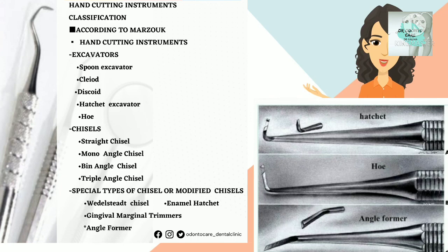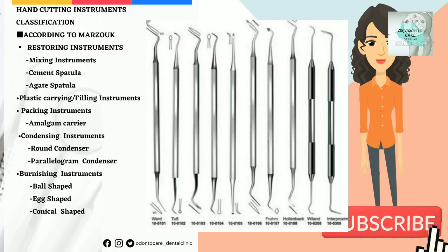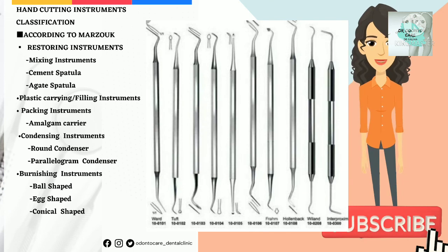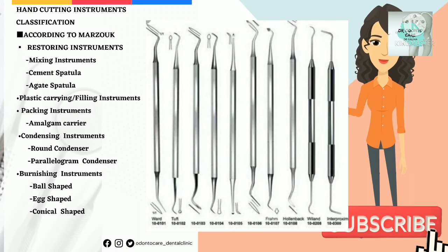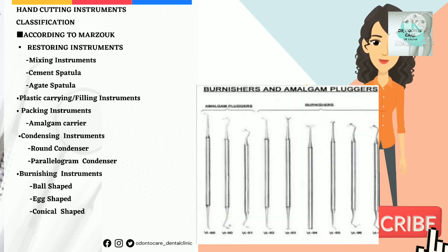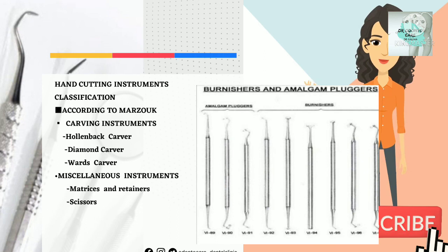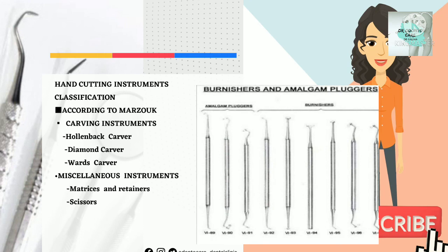Special types or modified chisels include Wedelstaedt chisel, enamel hatchet, gingival marginal trimmer, and angle former. Number 4: Restoring instruments — mixing instruments such as cement spatula and agate spatula; plastic carrying or filling instruments; packing instruments; condensing instruments including round condenser and parallelogram condenser; burnishing instruments including ball-shaped, egg-shaped, and conical-shaped burnishes; and carving instruments. Number 5: Miscellaneous instruments including matrices, retainers, and scissors.